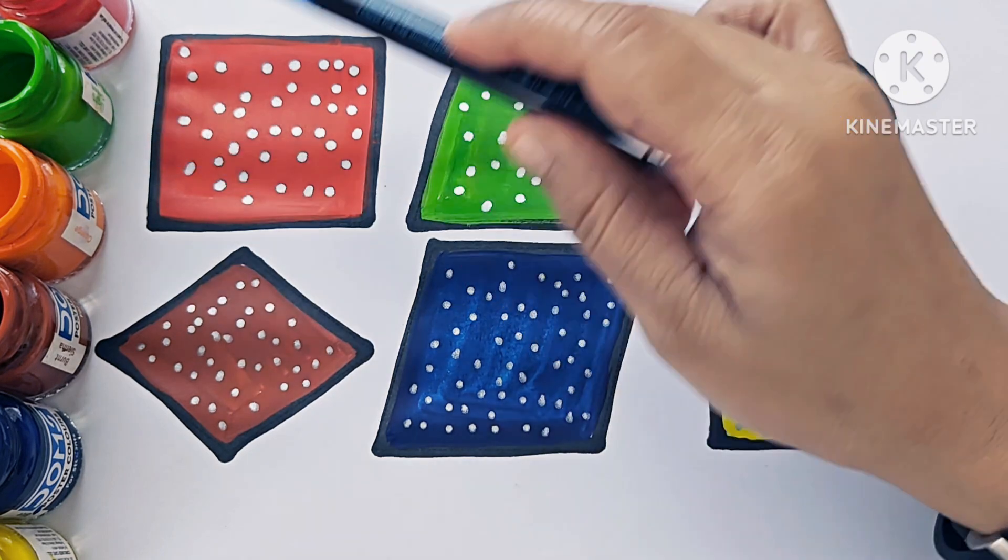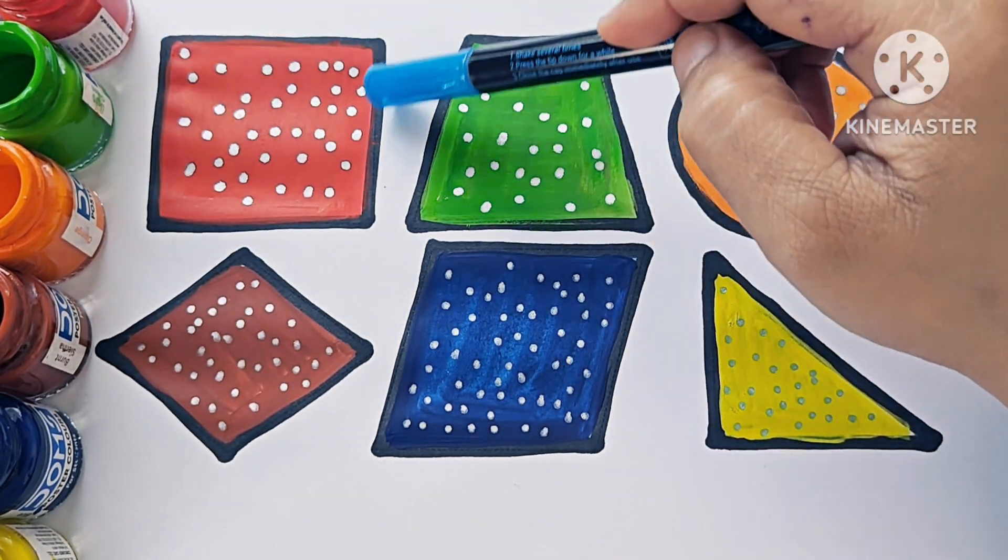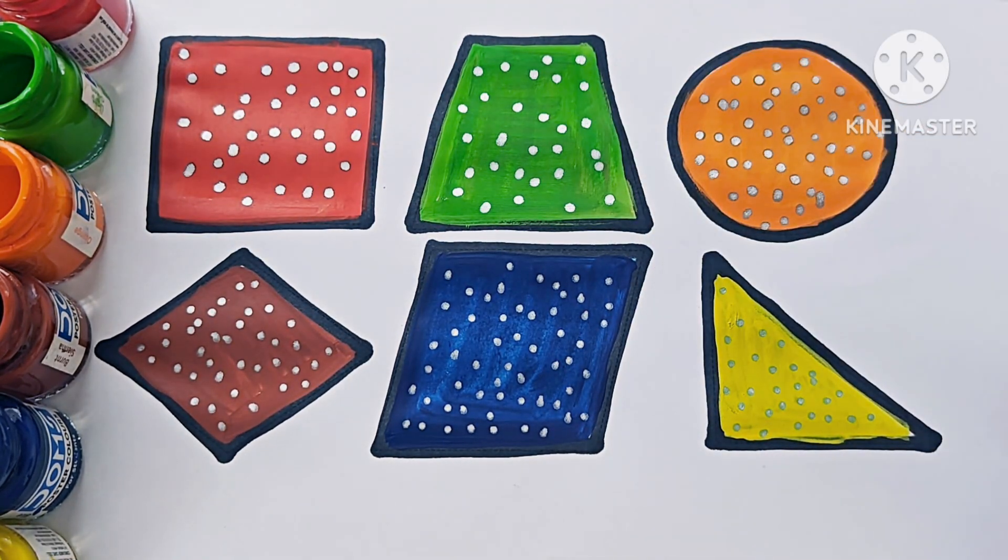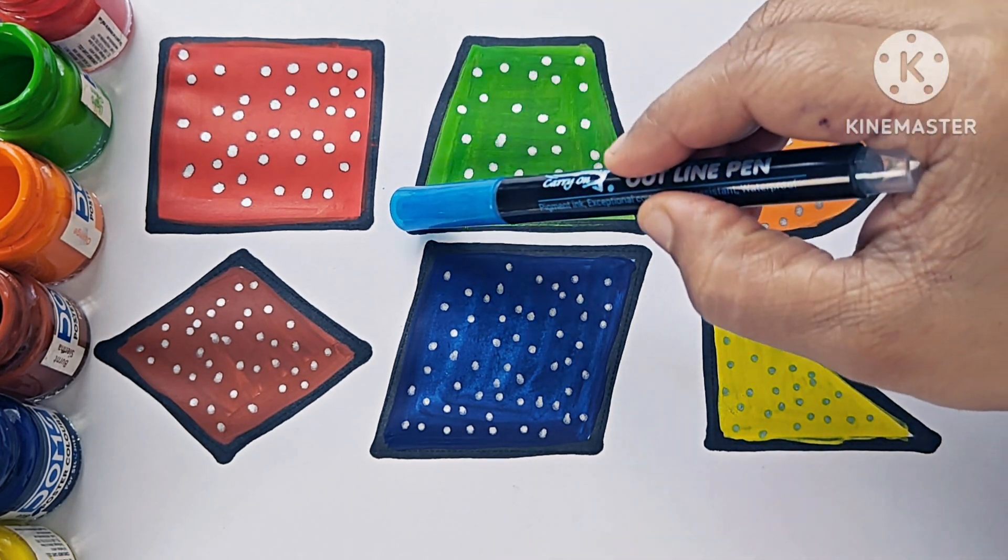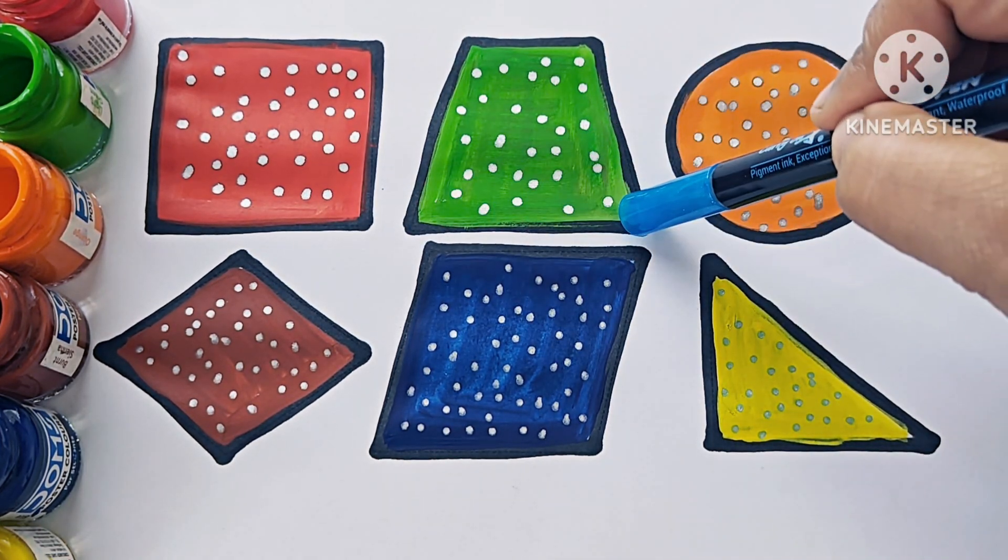This is square. It has four sides: 1, 2, 3, 4. This is trapezoid. It has four sides: 1, 2, 3, 4. It is 2D shape.